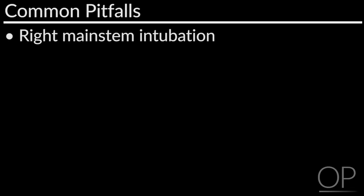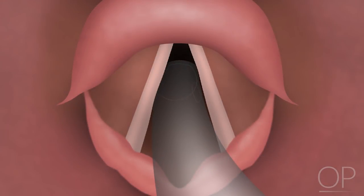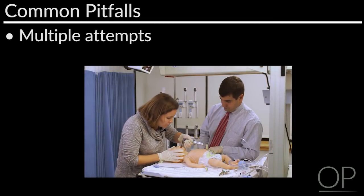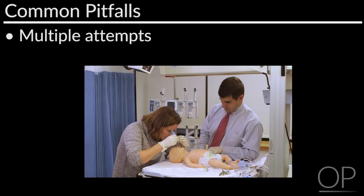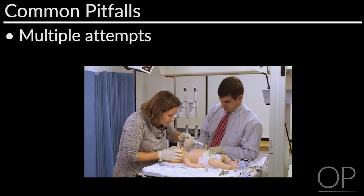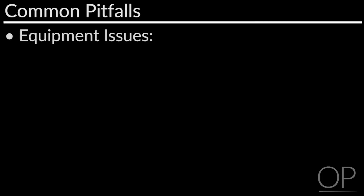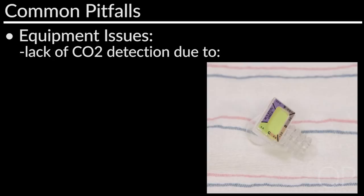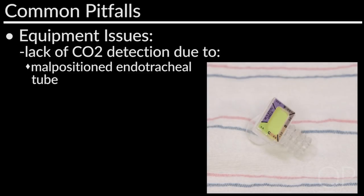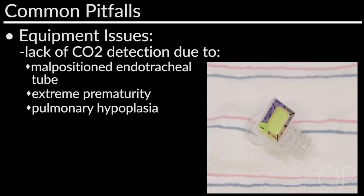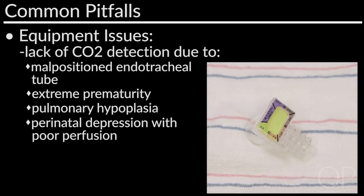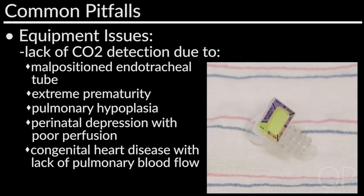Right main stem intubation: advancing the endotracheal tube too far into the trachea will result in bronchial intubation. To avoid this, use the lines on the endotracheal tube to guide the depth of insertion. Multiple attempts: matching trainee skill level to the anticipated difficulty of the airway is important. Aim to minimize repeated attempts by each provider and call for backup early if you are having difficulty securing the airway. Equipment issues: lack of CO2 detection may be due to malpositioned endotracheal tube, extreme prematurity, pulmonary hypoplasia, perinatal depression with poor perfusion, congenital heart disease with lack of pulmonary blood flow, or equipment malfunction.